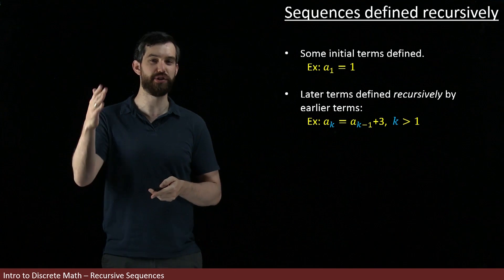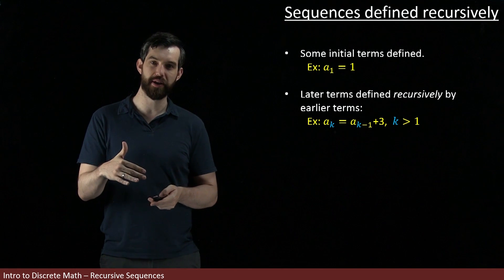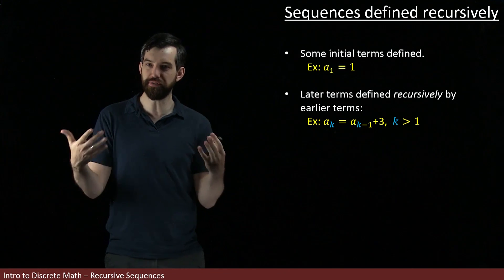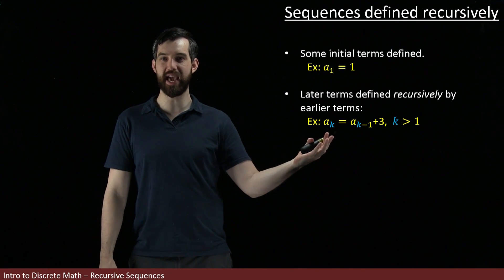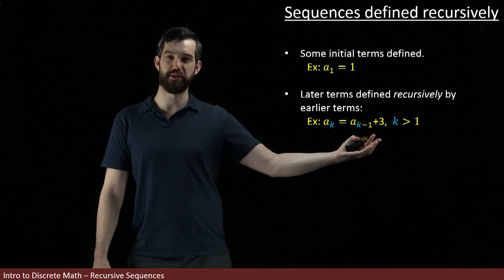For example, k-1, k-2, k-3, and so on. And so this is a recursive definition in the sense that new terms, Ak, are defined in terms of the previous terms.